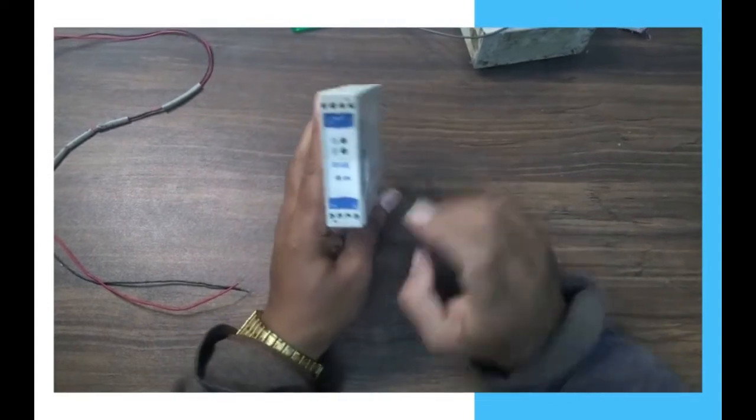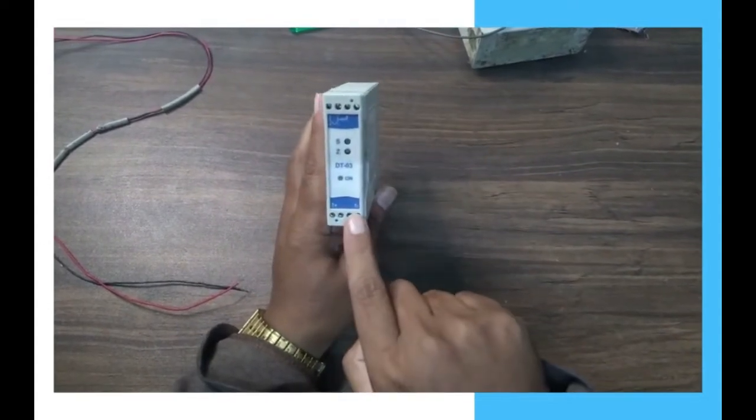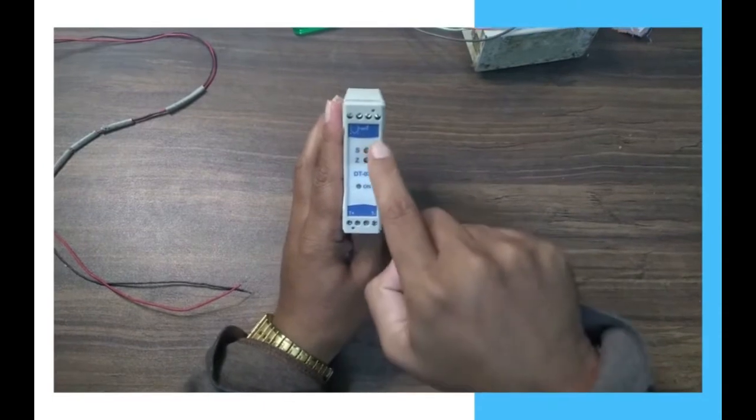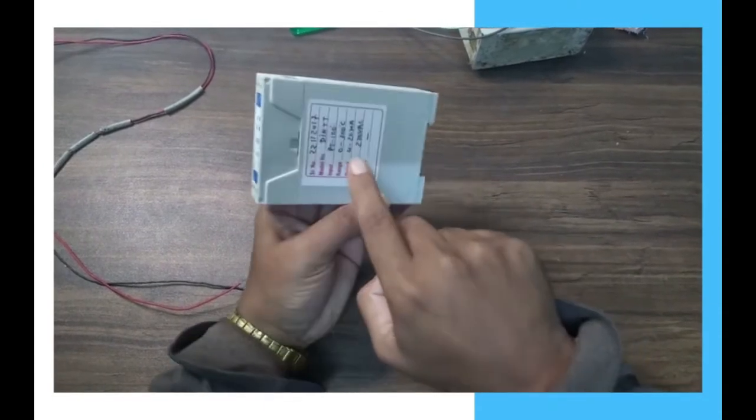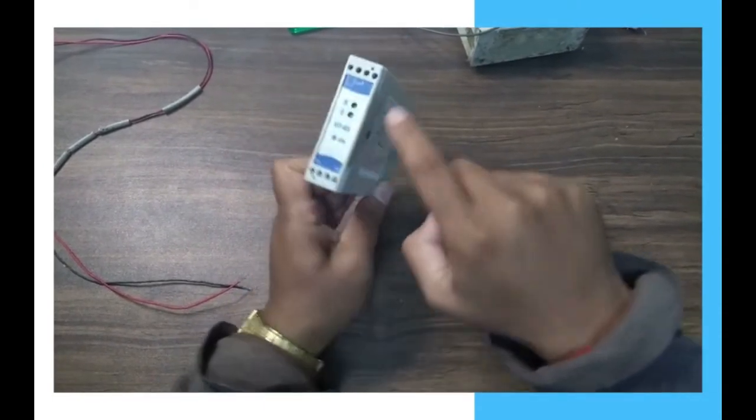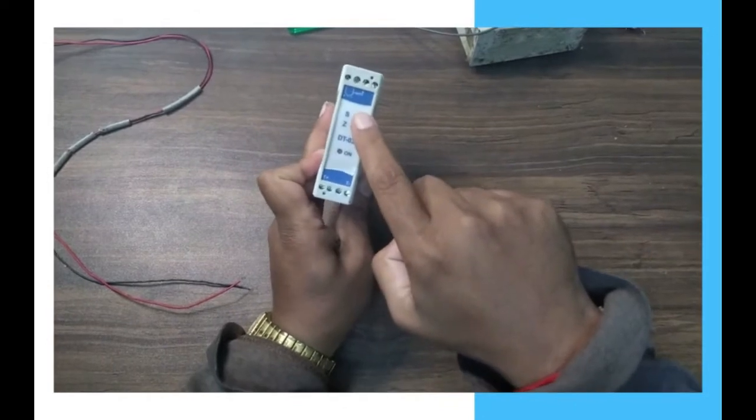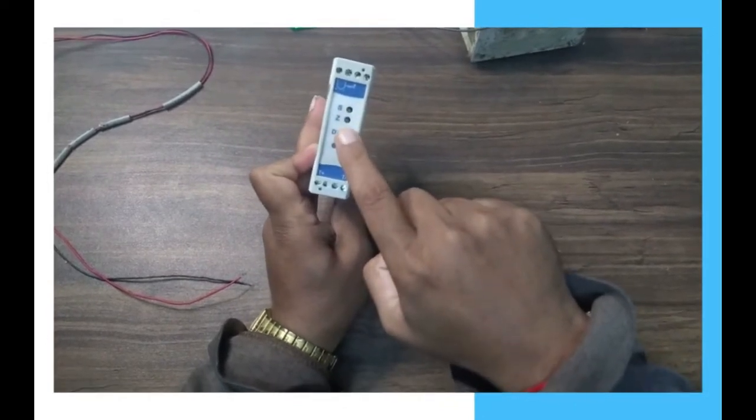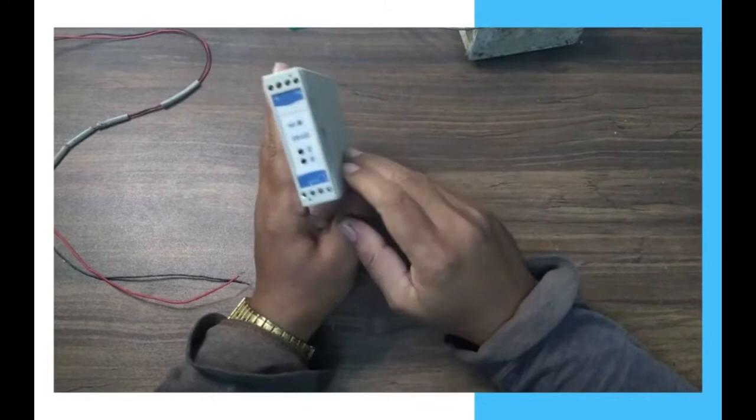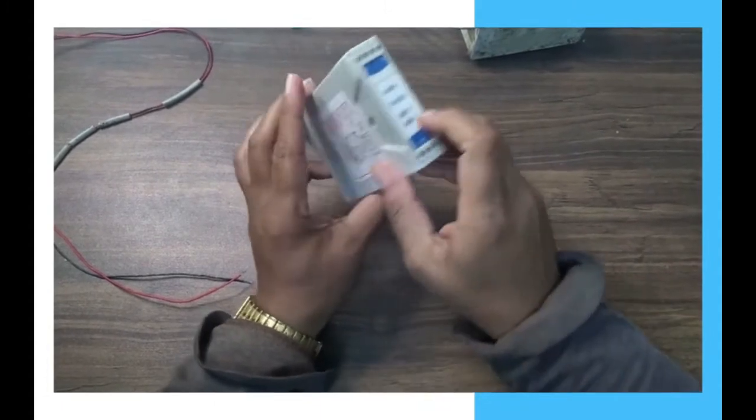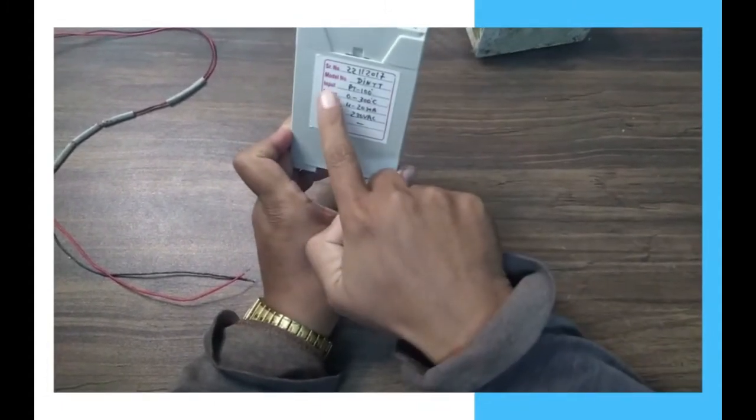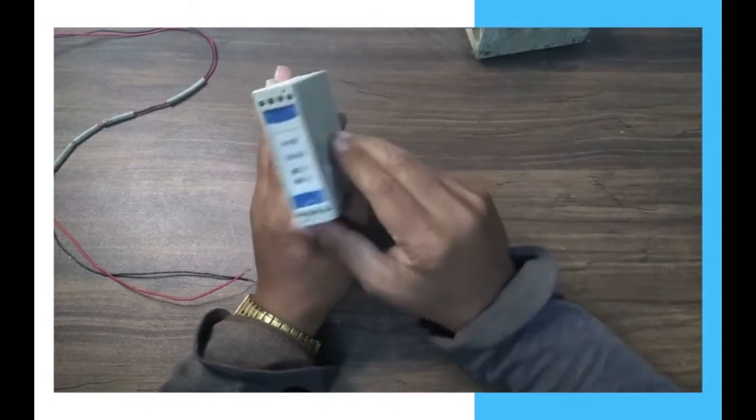Here we can apply 24 VDC power supply at the plus and minus terminals. This is a loop power device. Here, calibration ports for zero and span are also available. Zero means minimum value and span means maximum value. From this side, we can apply the RTD input.